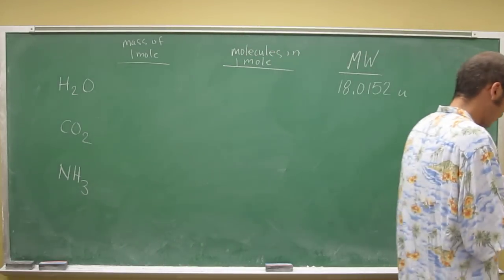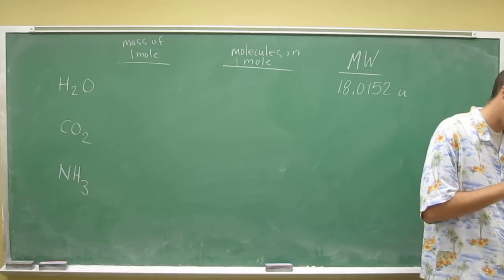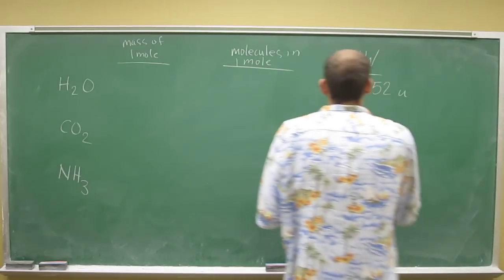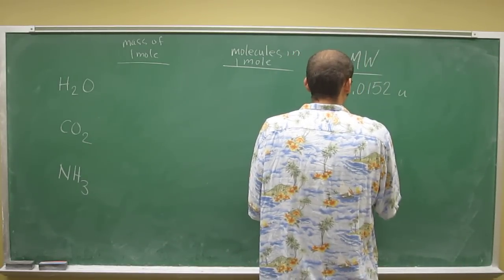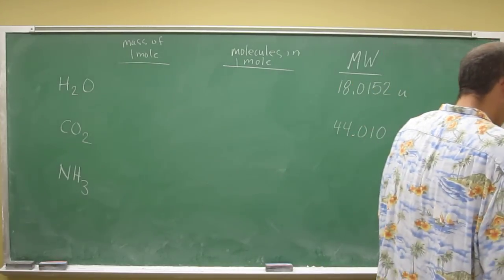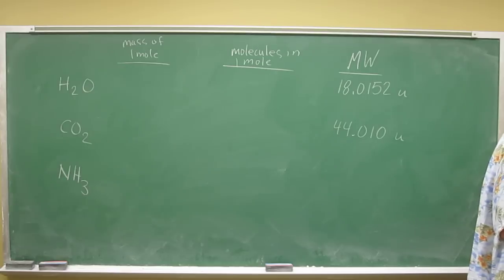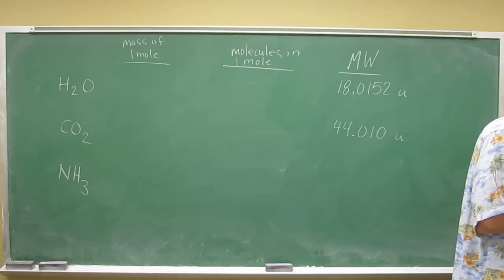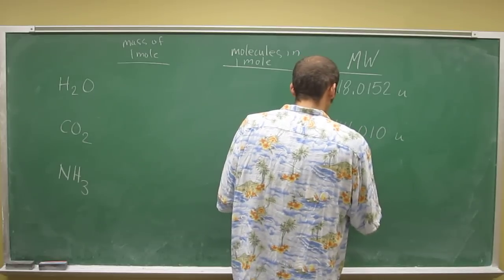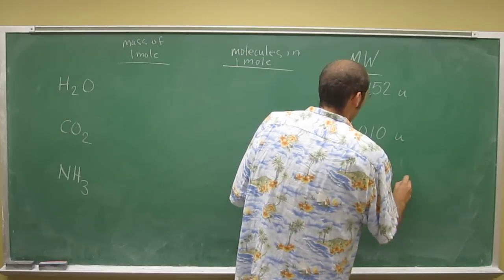And then let's do the same thing for carbon dioxide. So 12.011 plus 2 times 15.994, so 44.010. And then ammonia is 14.010 for nitrogen plus 3 times 1.007. So this one is going to be 17.0304 AMU.